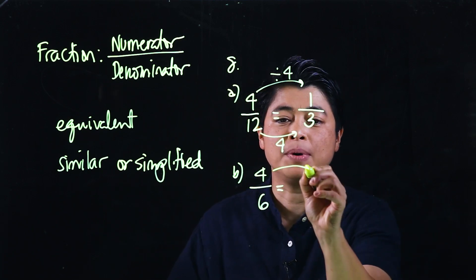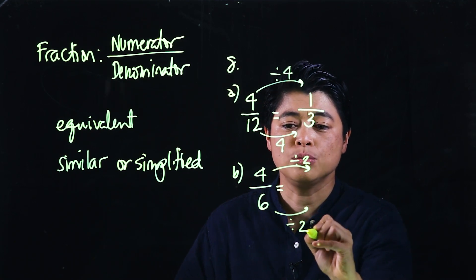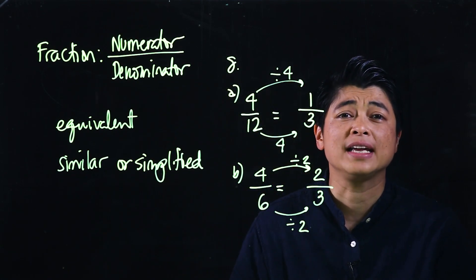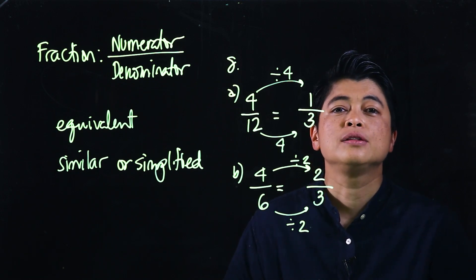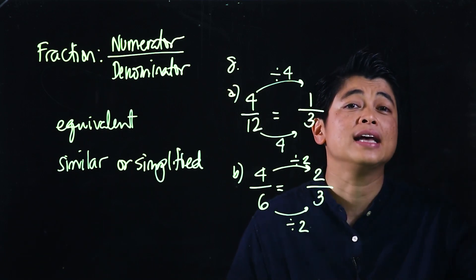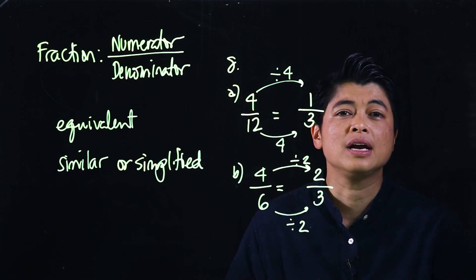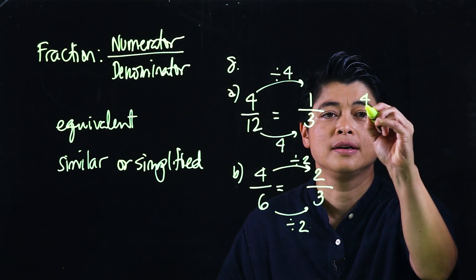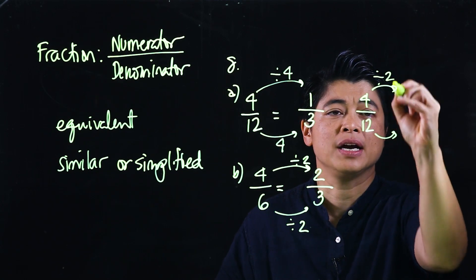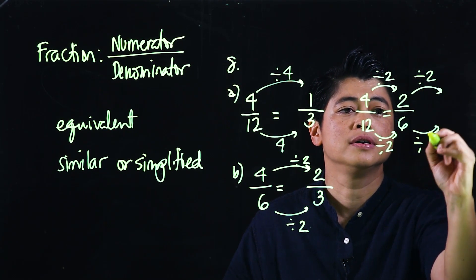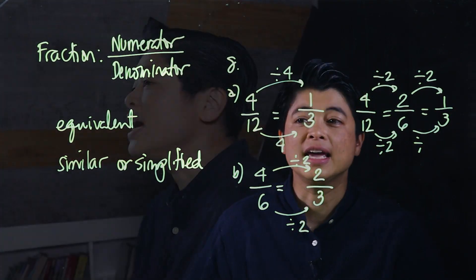For 4 over 6, we divide by two repeatedly. Dividing gives 2 over 3. If it's hard for kids to find the value to divide by, do it in small steps. Since both numbers are even, divide by two first to get 2 over 6, then divide again by two to get 1 over 3. There's nothing wrong with taking small steps — we don't need to pressure kids; we need them to enjoy learning.